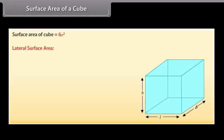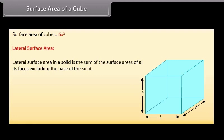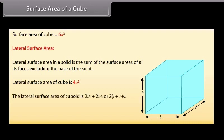Lateral surface area of a solid is the sum of the surface areas of all its faces excluding the base of the solid. Lateral surface area of a cube is 4A², and the lateral surface area of a cuboid is 2LH + 2BH, or 2(L + B)H.